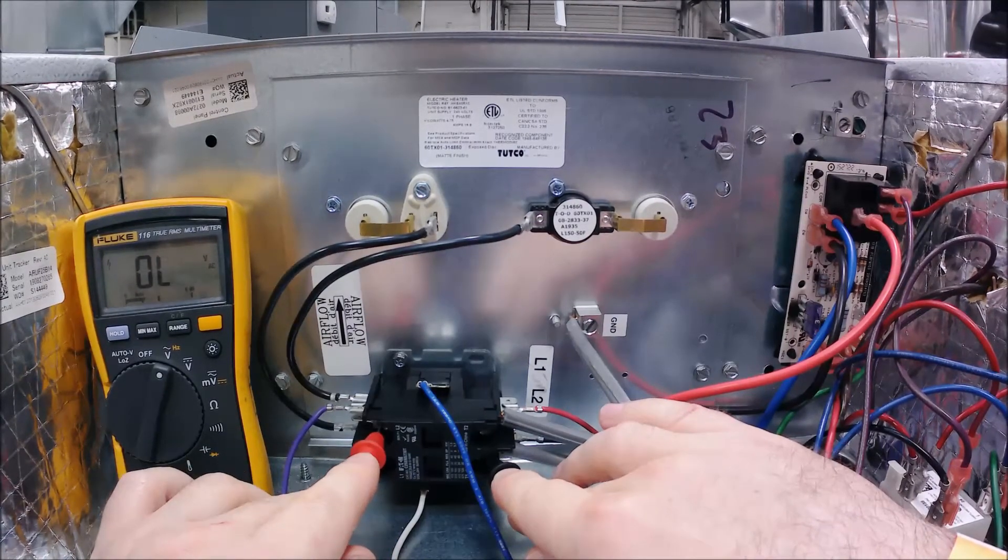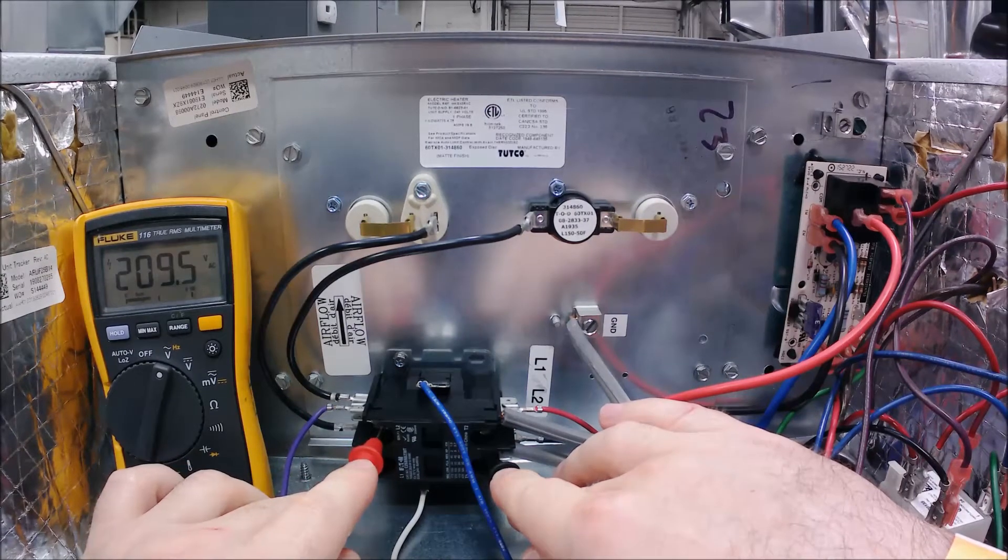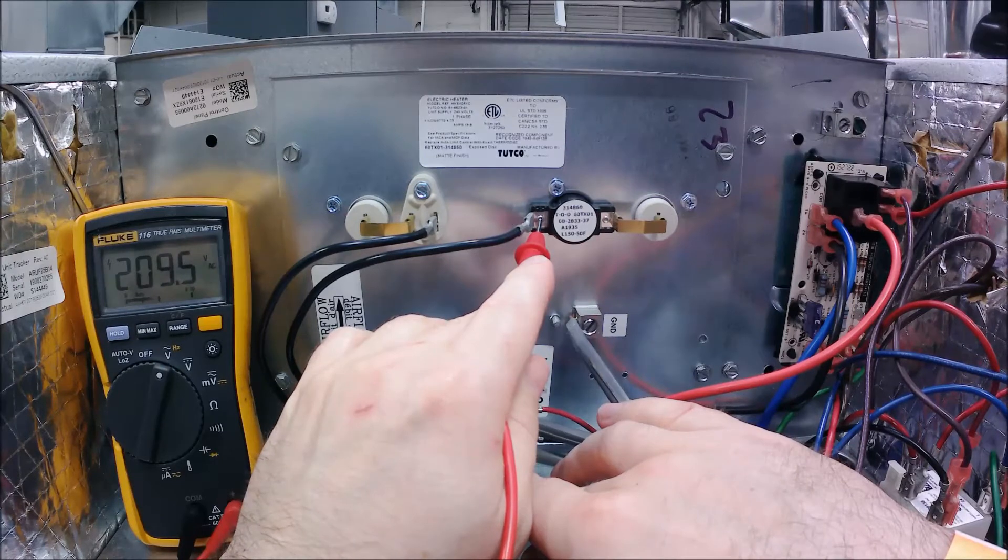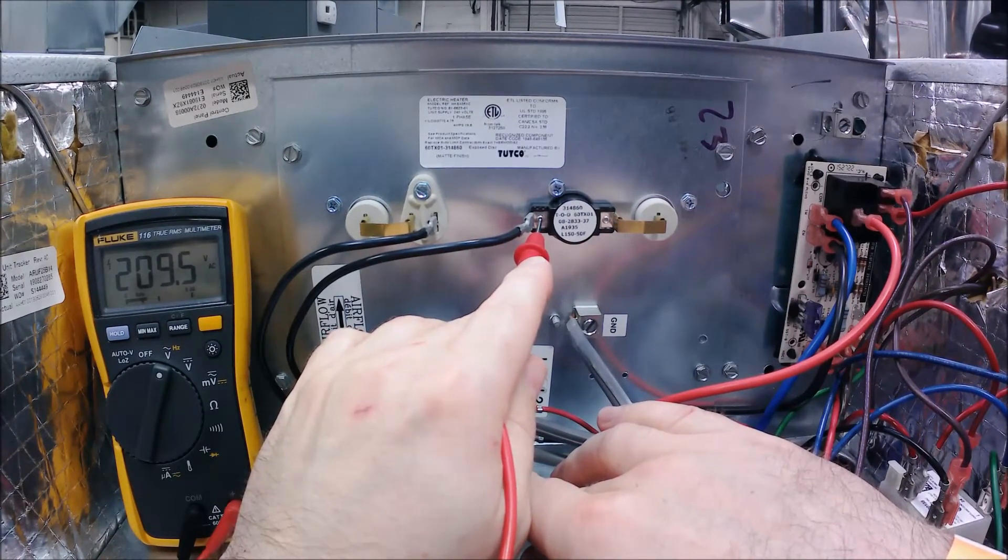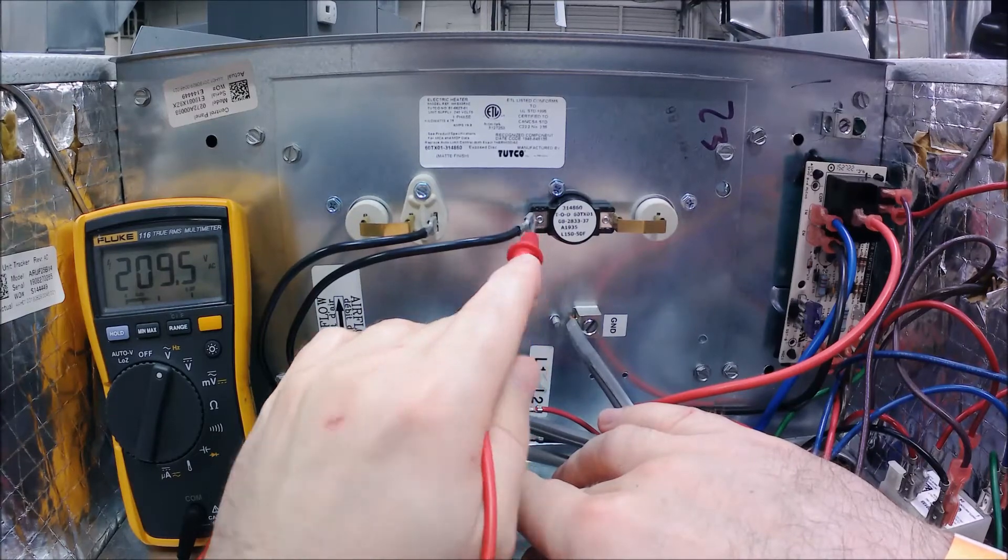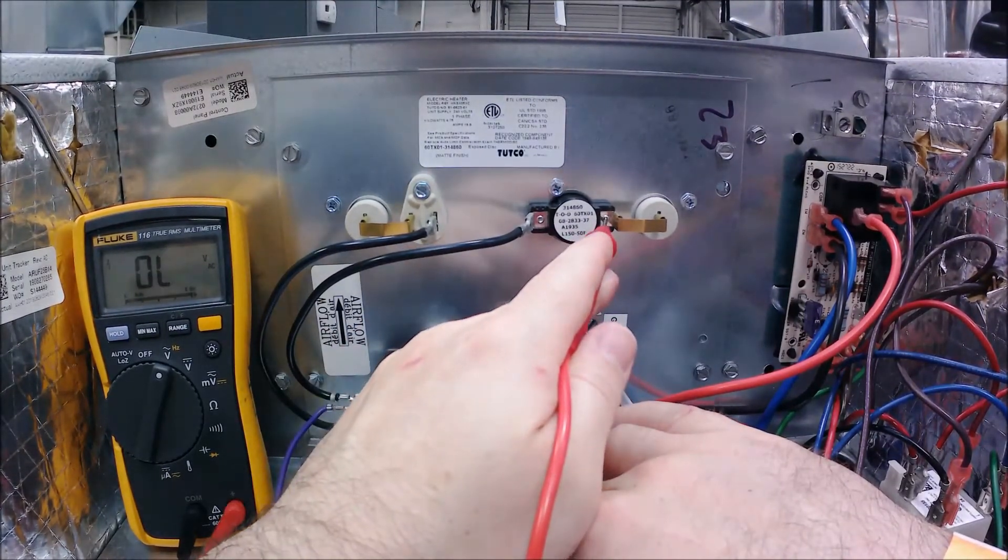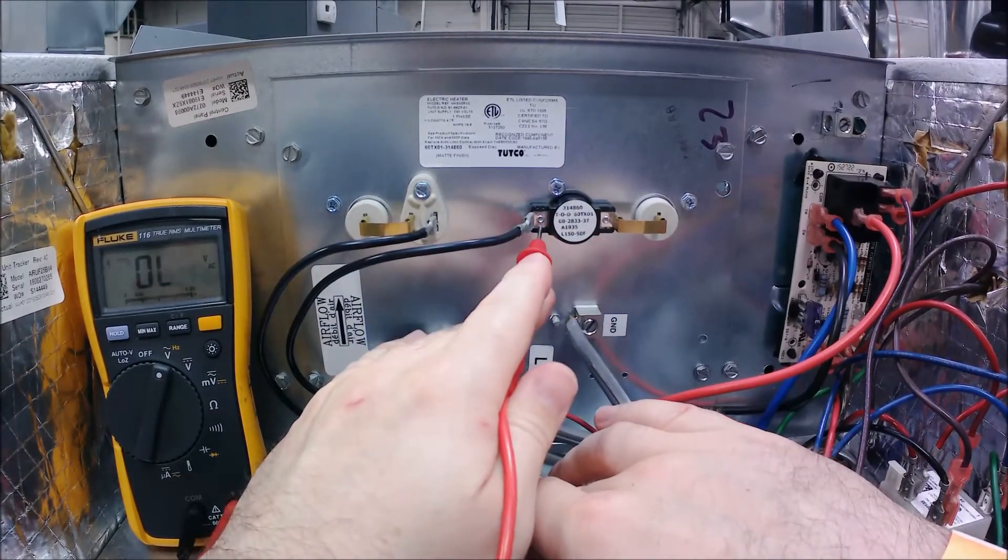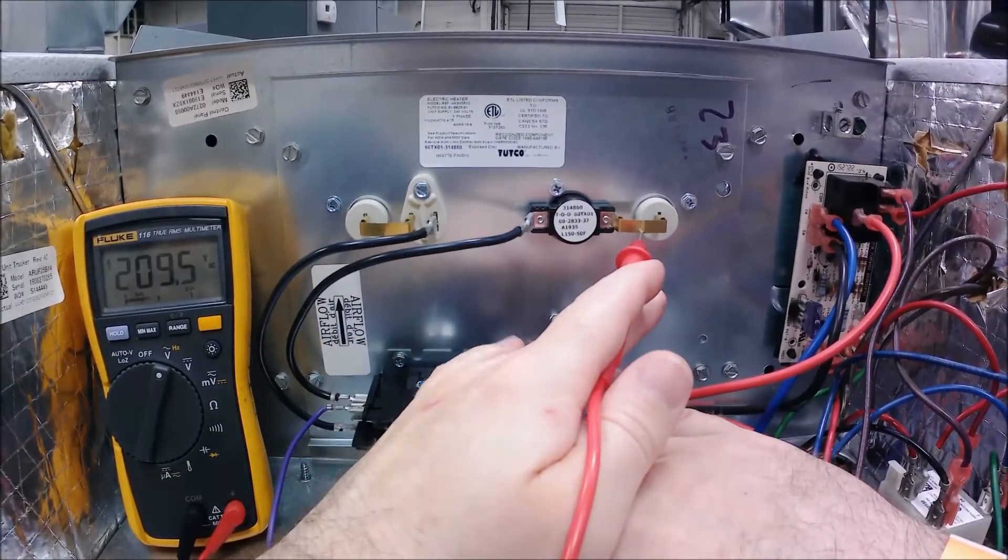So with the hopscotch method you simply follow the circuit. I could go from here at the contactor and I can go into my first safety, my high temperature limit. I've got 210 volts going in, and if that safety was the problem I would have zero coming out, but I've got 210. So I've got power going in the switch, power coming out of the switch.